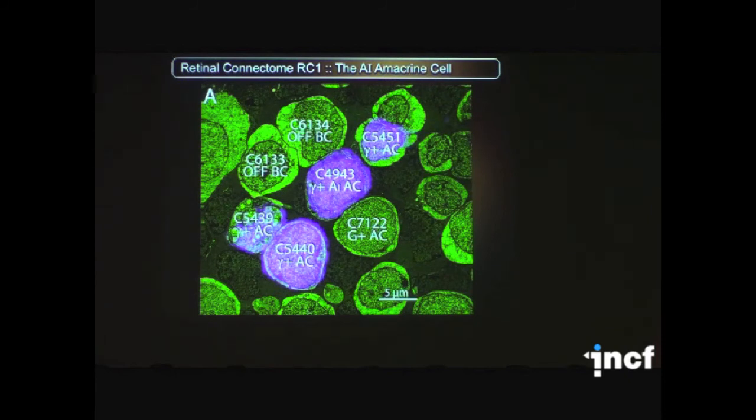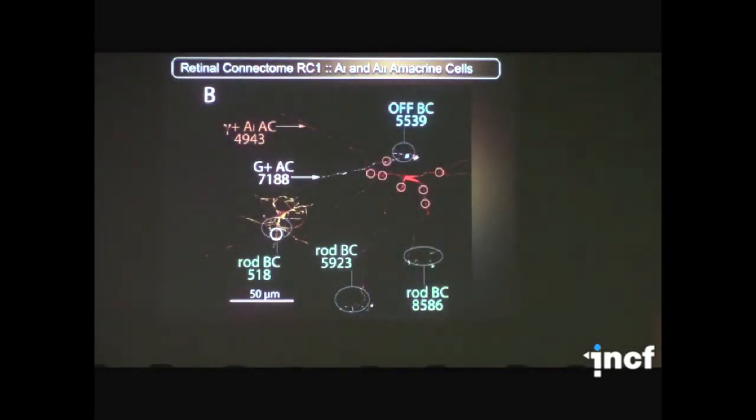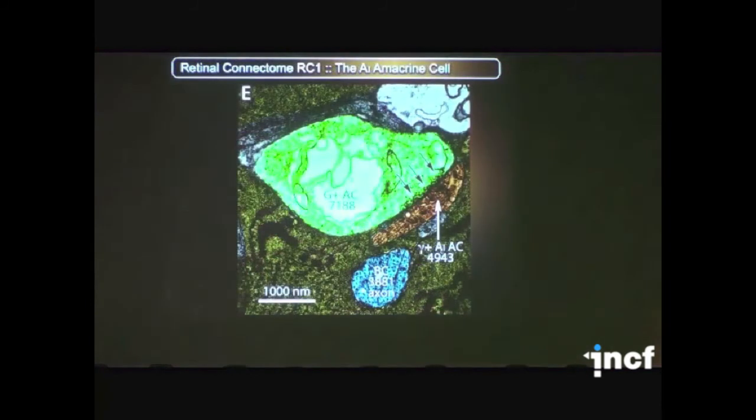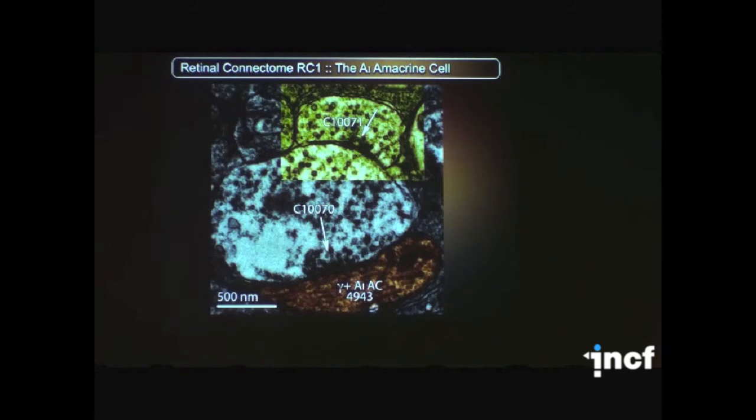A quick dive into other cells like the A1 amacrine cell, which is another part of the rod pathway, and it was thought to be selectively associated at its terminals with rod bipolar cells. And what we were able to discover is that this cell actually has a lot of cone drive high up on its dendrites close to its cell body. In fact, it receives massive glycinergic input at that point and heavy GABAergic input further on down the dendrites.